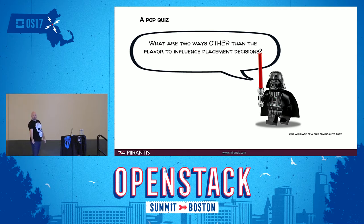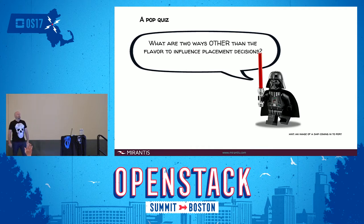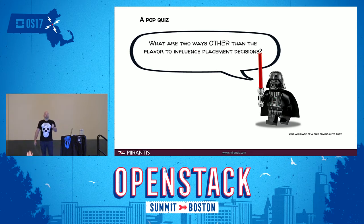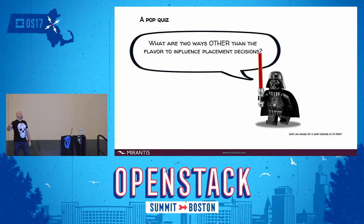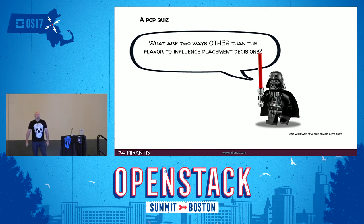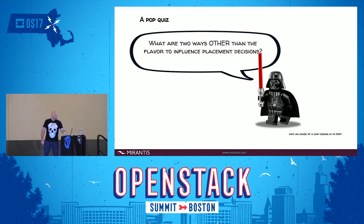PCI devices — if you set up a port in Neutron and it's decorated with a bunch of port binding information, that gets created as a PCI device request and influences scheduling decisions. You get a prize — choose your shirt or your USB key.